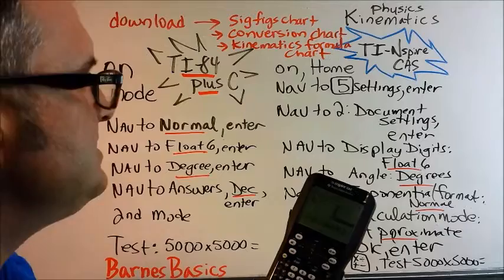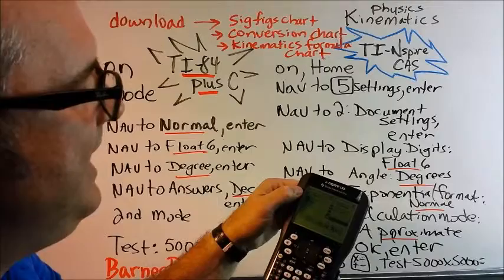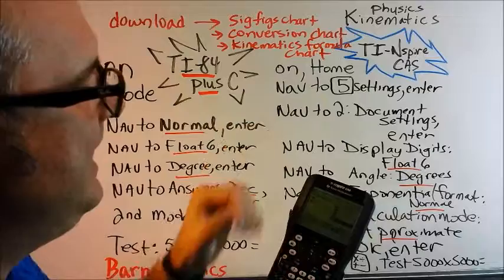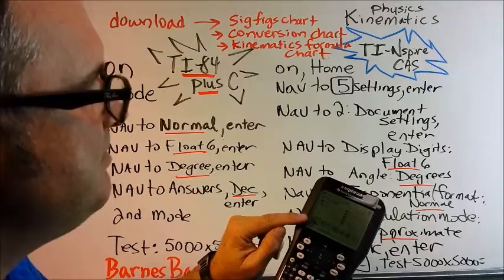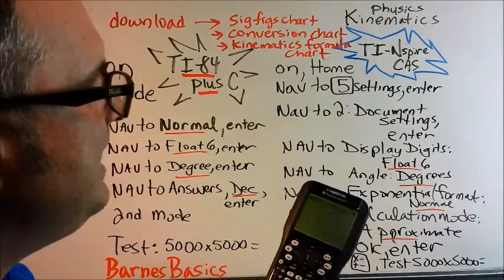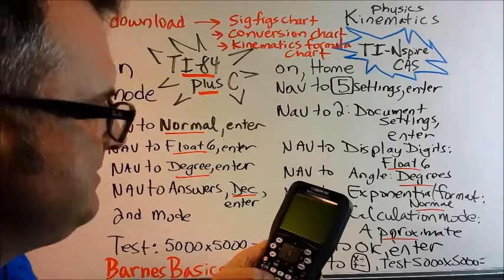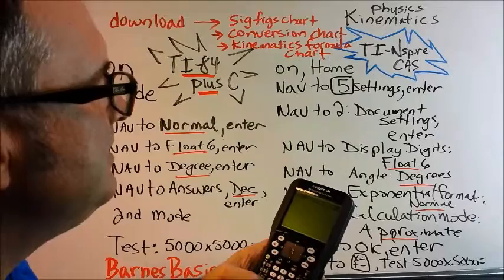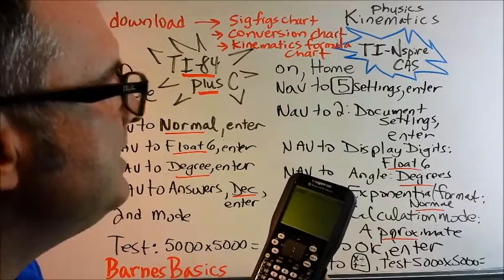Now, on the main view screen of the TI Inspire, we are not going to use the scratch pad calculate because all of these document settings that we did don't affect that. So we are going to use the nav pad and go down to this one that has multiply, divide, minus, and plus. And we are going to click on that one and open a page. And so we are going to enter 5000 times 5000. And again, we are expecting to have a 25 with six zeros behind it.